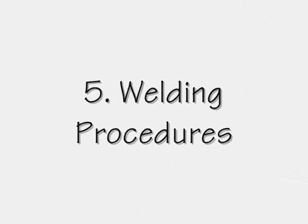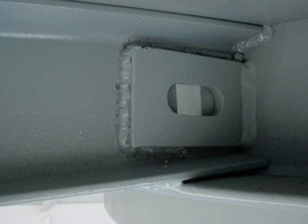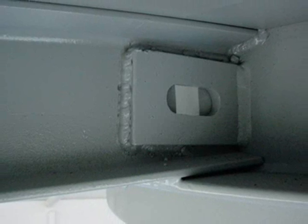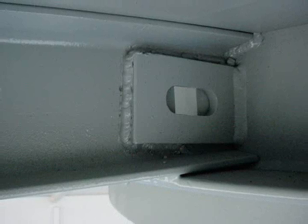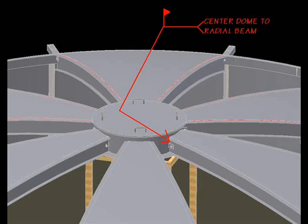Number five, welding procedures. Seal weld the radial beams to the center ring to distribute heat and prevent buckling. Weld beams working from opposite sides using back step or skip weld sequence.